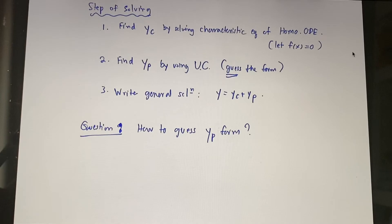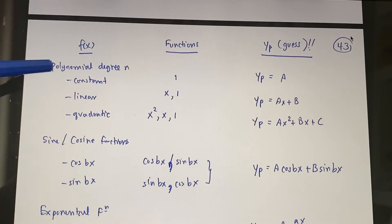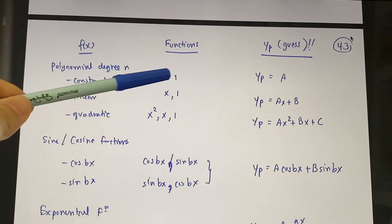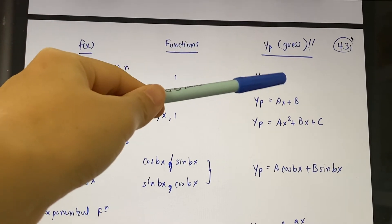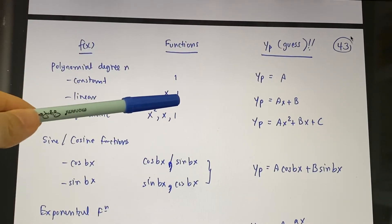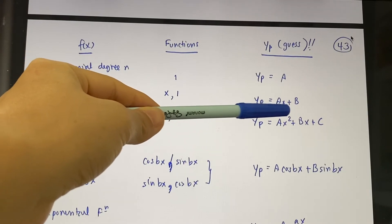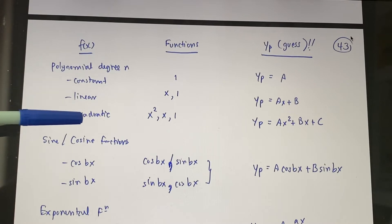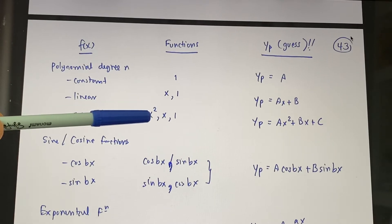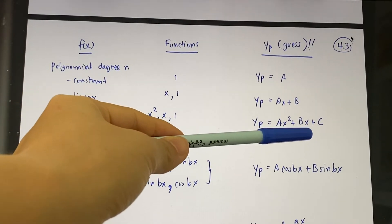Let's look at how to guess yp based on the form of f(x). If f(x) is a polynomial of degree zero — a constant — then yp is just a constant A. If f(x) is linear, yp equals Ax + B. If f(x) is quadratic — up to degree two — then yp equals Ax² + Bx + C.